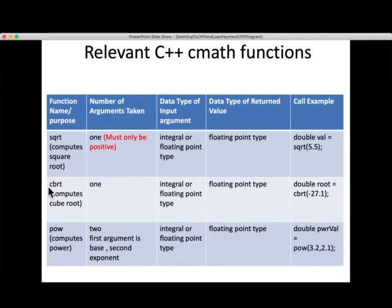The next function we need is cbrt, which computes the cube root. This also takes only one argument. The argument could be integral type or floating point type. The data type returned is floating point type. This is the example of use: if I want the cube root of minus 27.1, then the function call is cbrt, value passed is 27.1. The computer will use the cbrt software, take the cube root of 27.1, and store that into root.